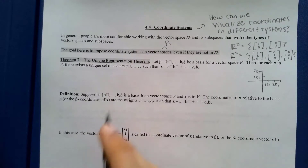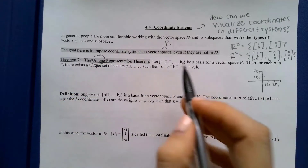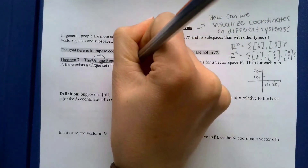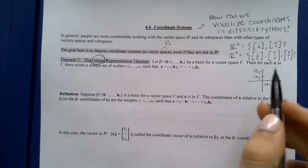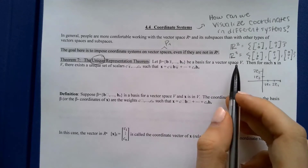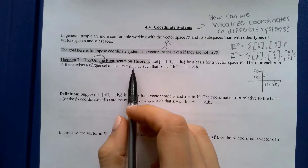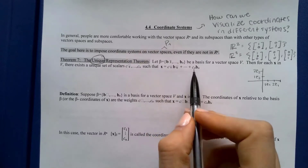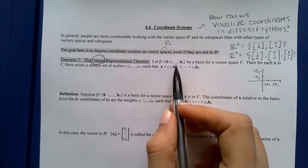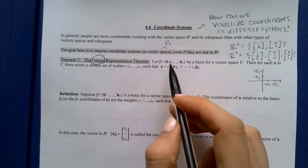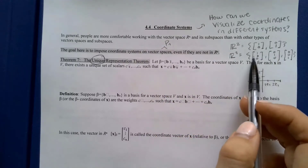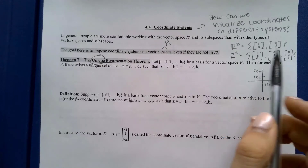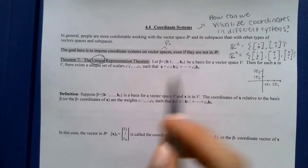First, each coordinate is a unique representation. If we have a basis b1, b2, up to bn for a vector space, then for each vector x in that vector space there will be a unique set of scalars c1, c2, up to cn such that x can be represented as a linear combination of the basis vectors. This is what having a basis means — a set of building blocks to reach the entire vector space.